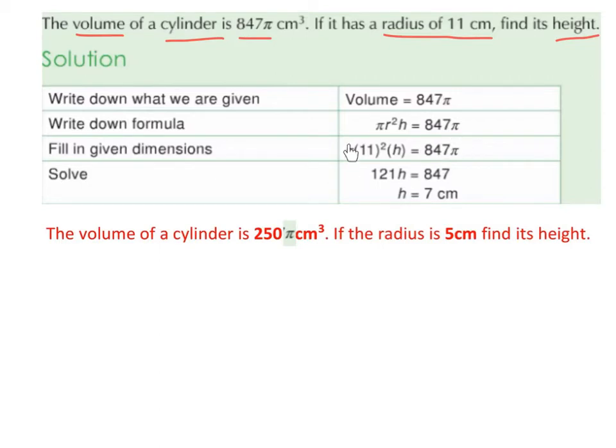Now we notice that we have a π on the left of the equal sign and a π on the right. What we want to do is solve for h, so we want to get h on its own. We can cancel out both of those π's because there's one on either side.